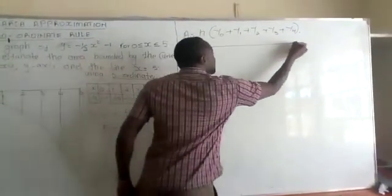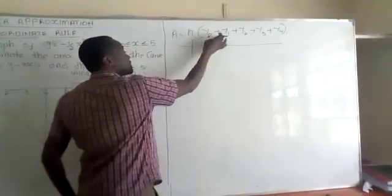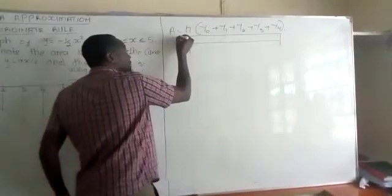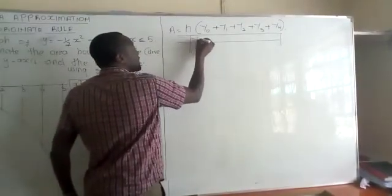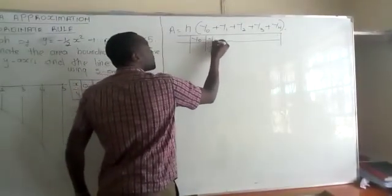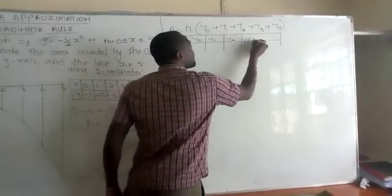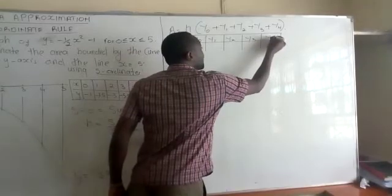Then we need to get the values of these ordnates. Therefore, we go ahead and get y naught, y1, y2, y3, and y4.